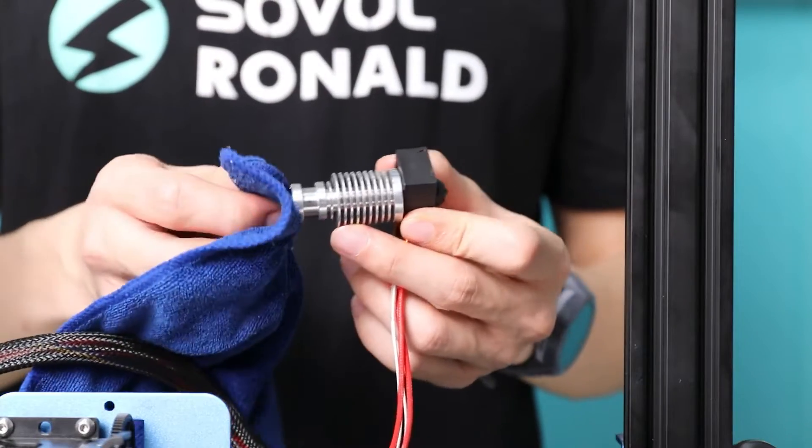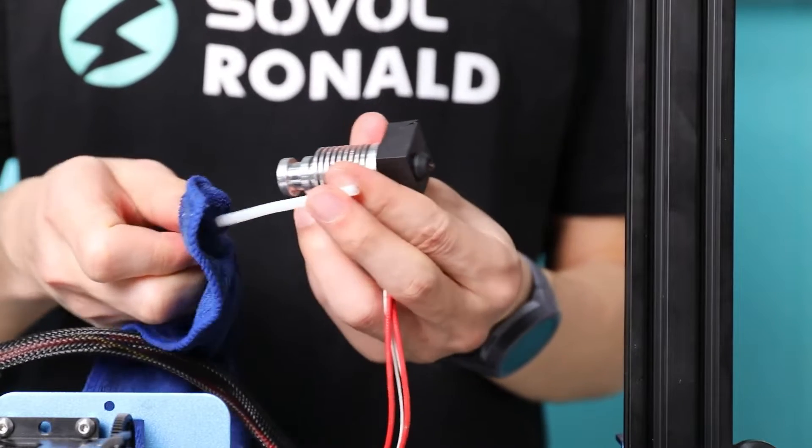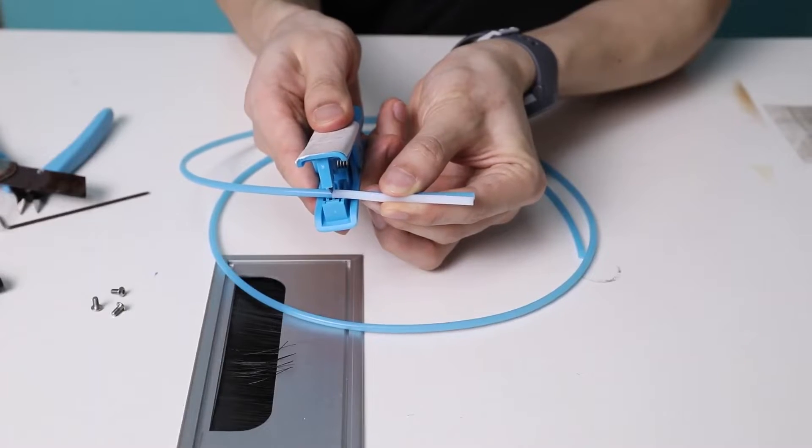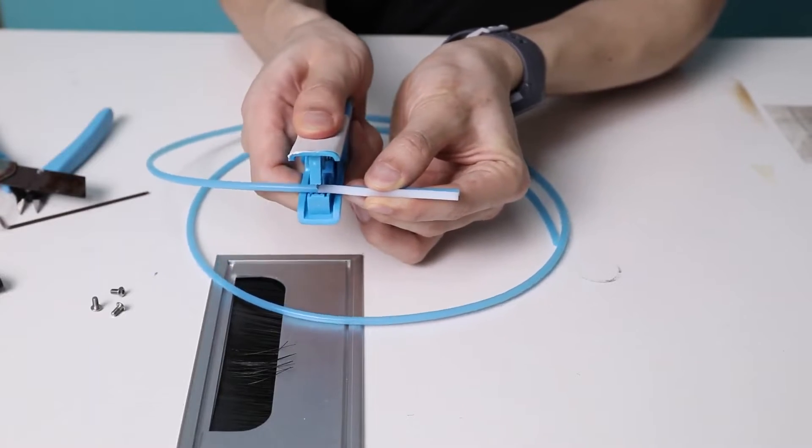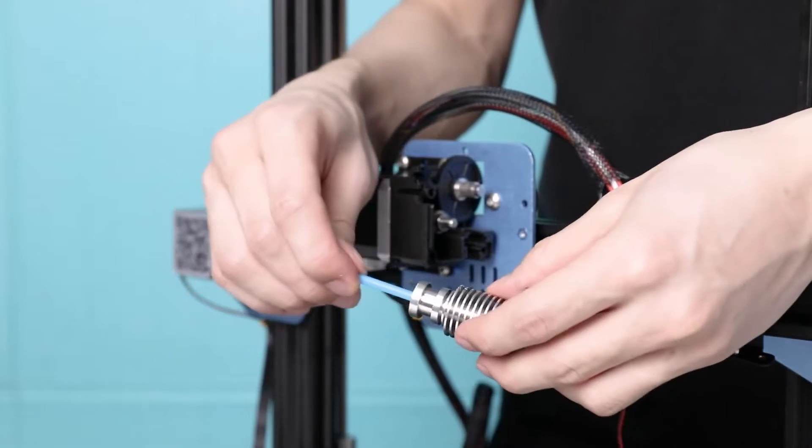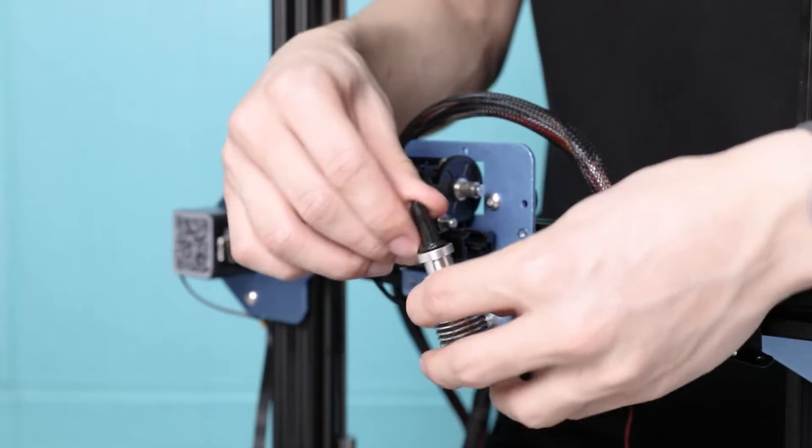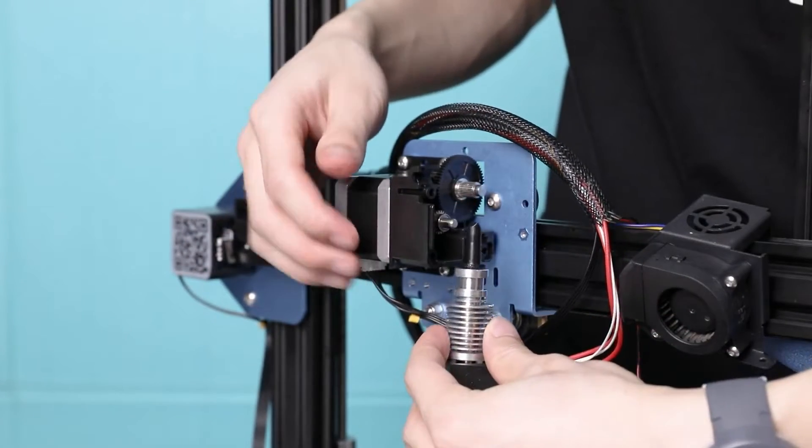It might be a little bit hard to take out the old PTFE tubing, but you can use a towel to increase the friction. Take the old PTFE tubing and measure out the right length of the new one and cut it with a cutter. Ensure the new PTFE tubing goes all the way to the nozzle. Bring back the filament guide and see if it aligns perfectly with the new tubing.